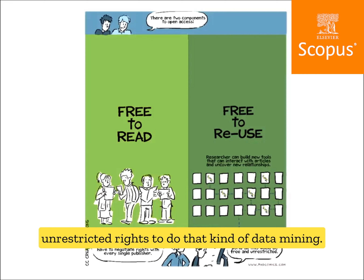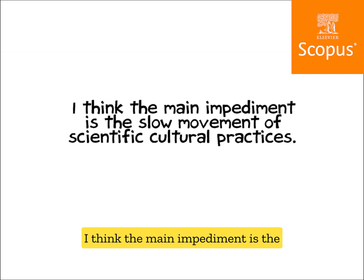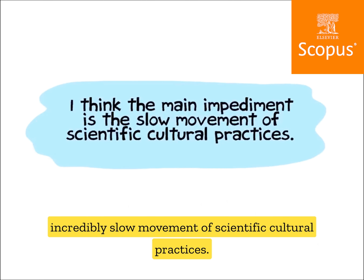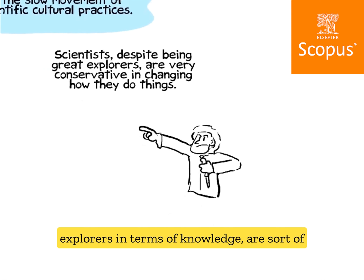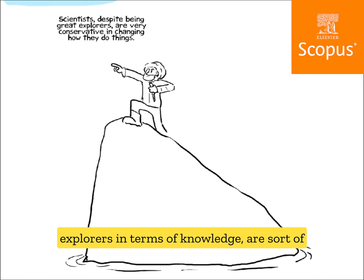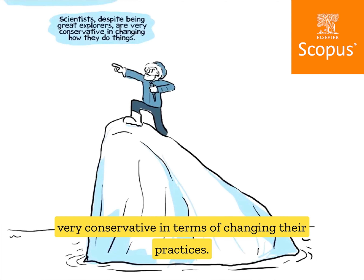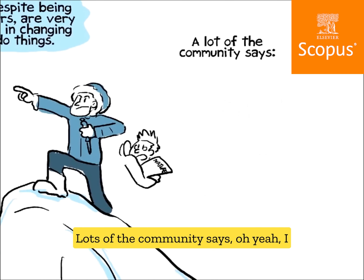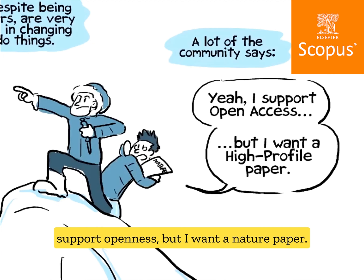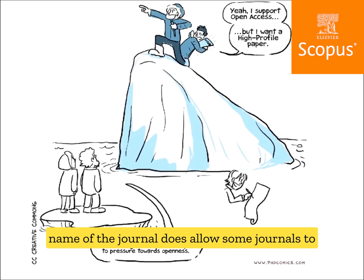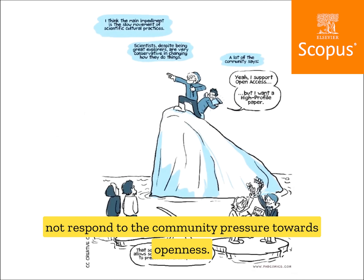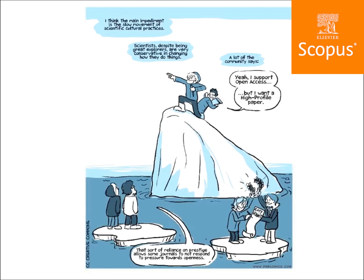The main impediment is the incredibly slow movement of scientific cultural practices. Scientists, despite being great explorers in terms of knowledge, are very conservative about changing their practices. Lots of the community says, 'I support openness, but I want a Nature paper.' That reliance on impact factor and journal name does allow some journals not to respond to community pressure towards openness.